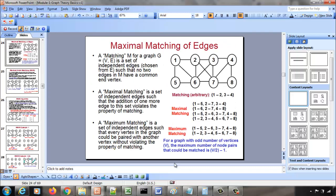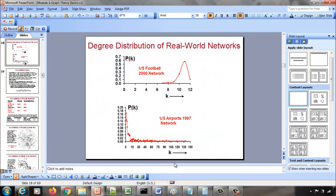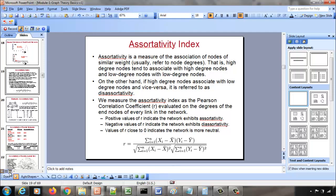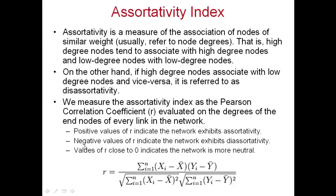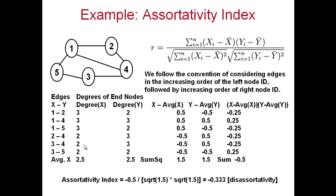What we are going to do is assess or measure the association of nodes with similar weight. Given a graph like this, what is the degree similarity among the vertices based on the degrees of the end vertices — whether two vertices with a high degree are connected to each other, or two vertices with low degrees, or one vertex has a high degree and the other has a low degree.